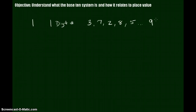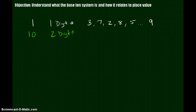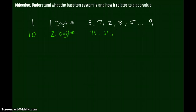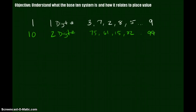Because after nine, we go up to 10, which is our two-digit number. 10 is our smallest two-digit number. There are a bunch of two-digit numbers: 75, 61, 15, and 82 are all two-digit numbers. The smallest two-digit number is 10, and the biggest two-digit number is 99.